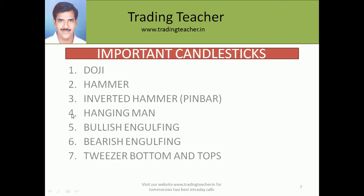I have listed 7 important types of candlestick patterns: doji, hammer, inverted hammer (also called a pin bar), hanging man, bullish engulfing, bearish engulfing, and patterns at the bottom and top. In this episode we are going to learn about the doji, and in the next episode we will cover hammer and inverted hammer, and so on.